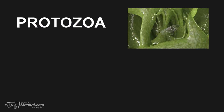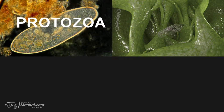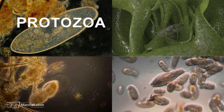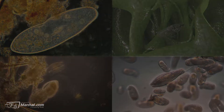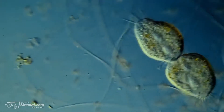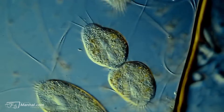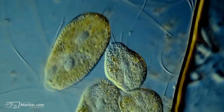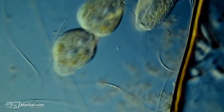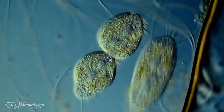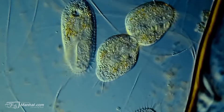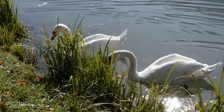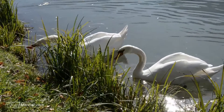Protozoa are unicellular living things. The cell of a protozoan contains a nucleus and the different organelles found in the cells of complex living things, such as plants and animals.